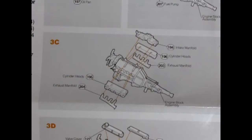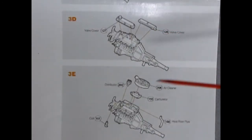We continue our engine assembly with our intake manifold, cylinder heads and exhaust manifolds all gluing onto our assembled engine followed by our valve covers, air cleaner, carburetor distributor, coil and heat riser pipe.